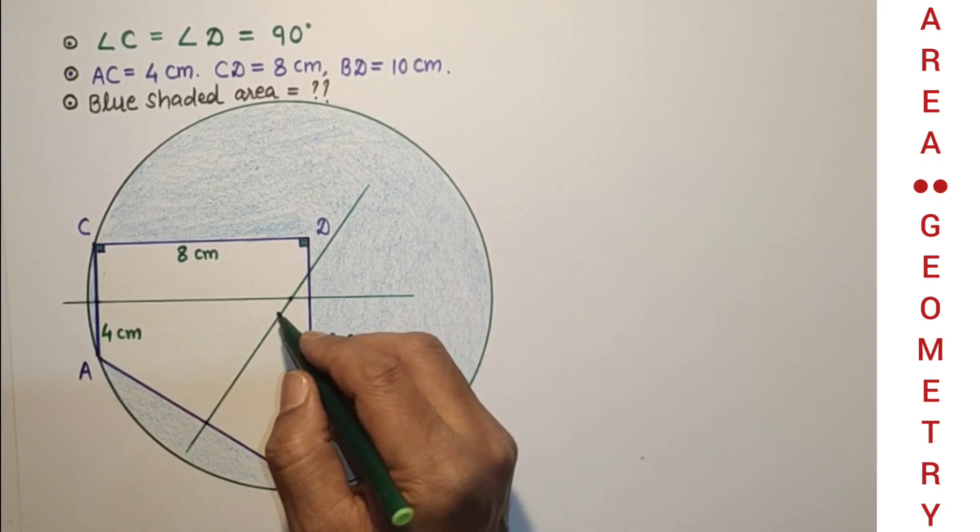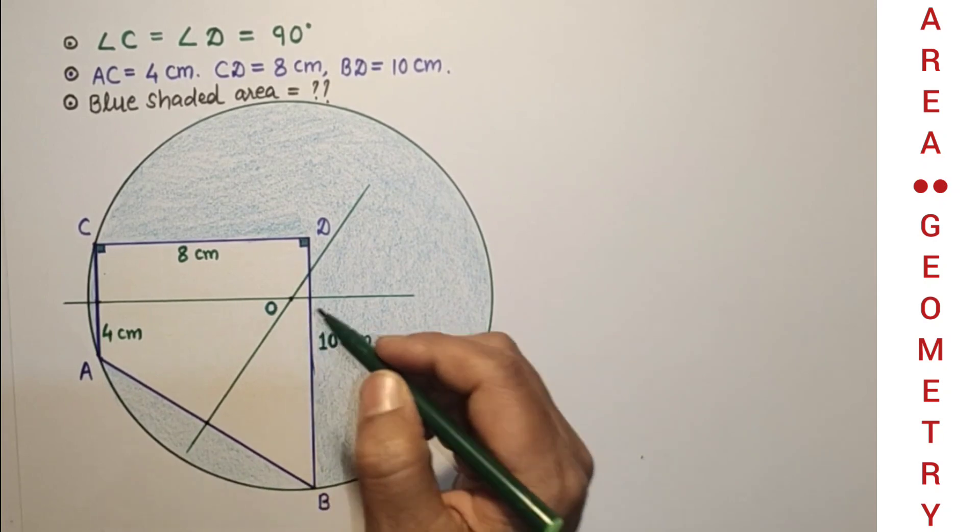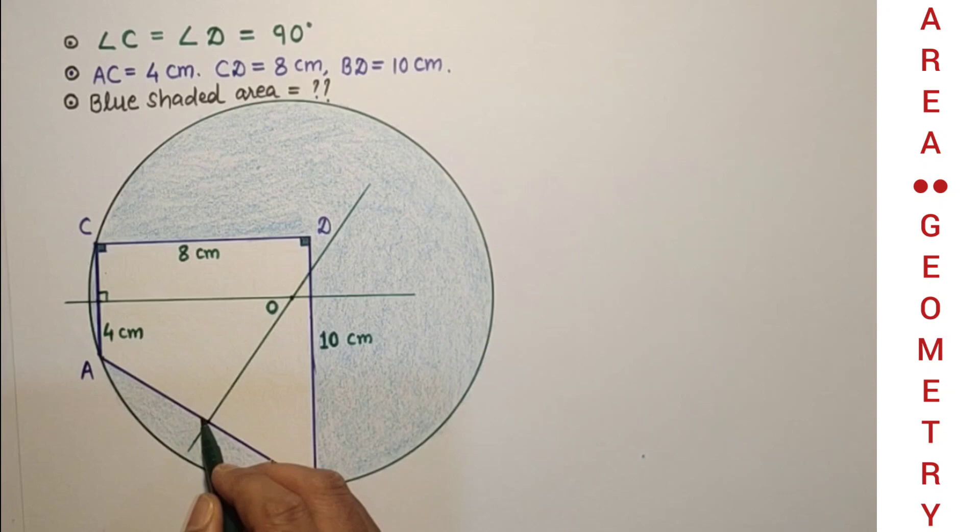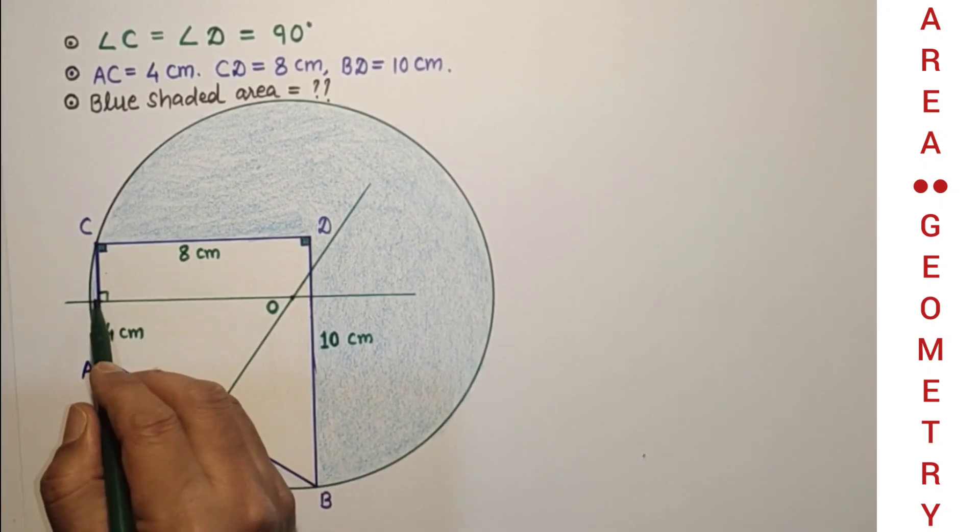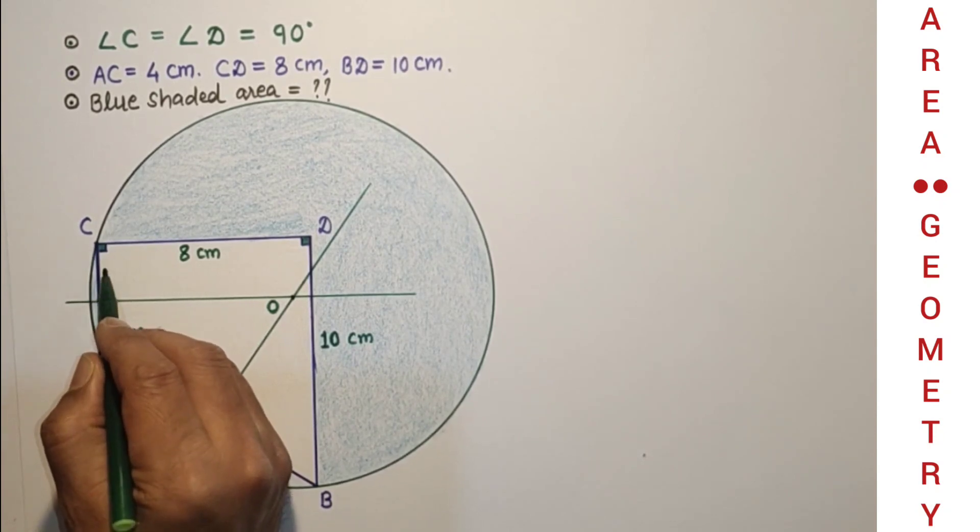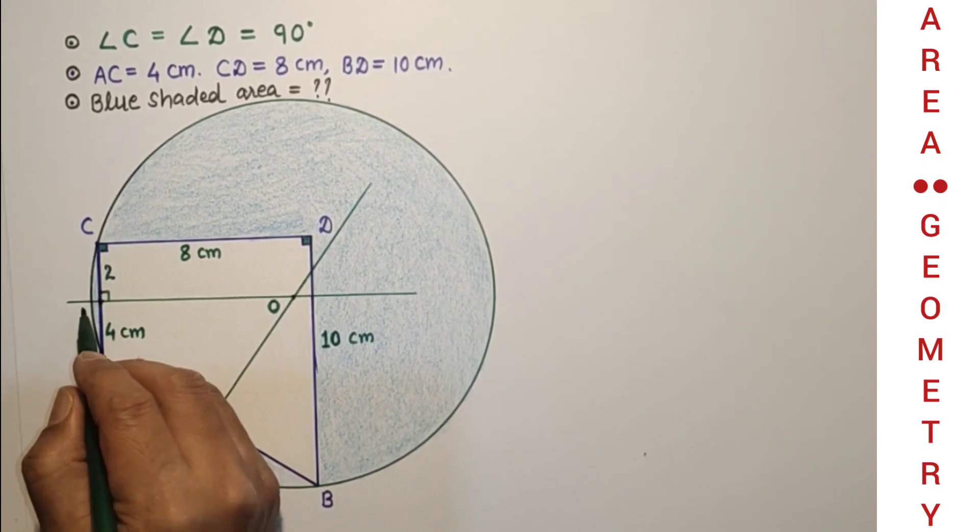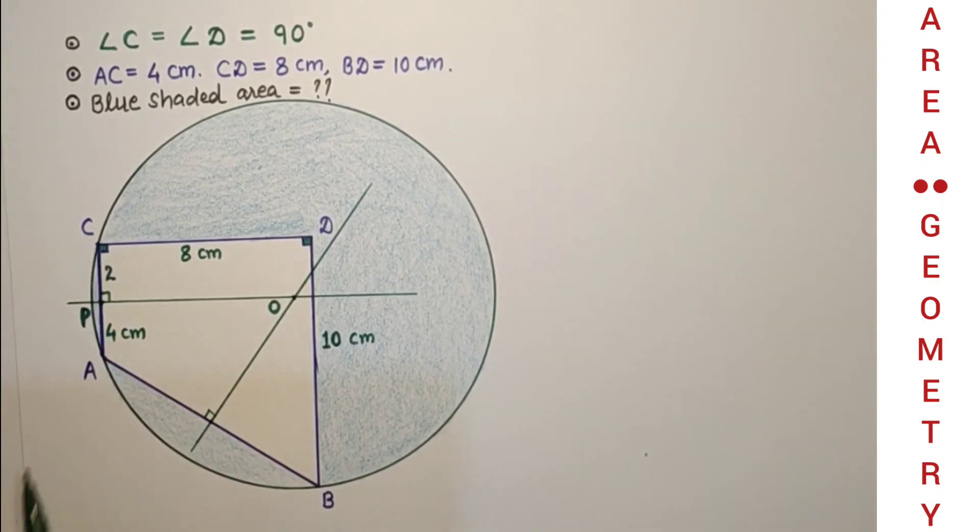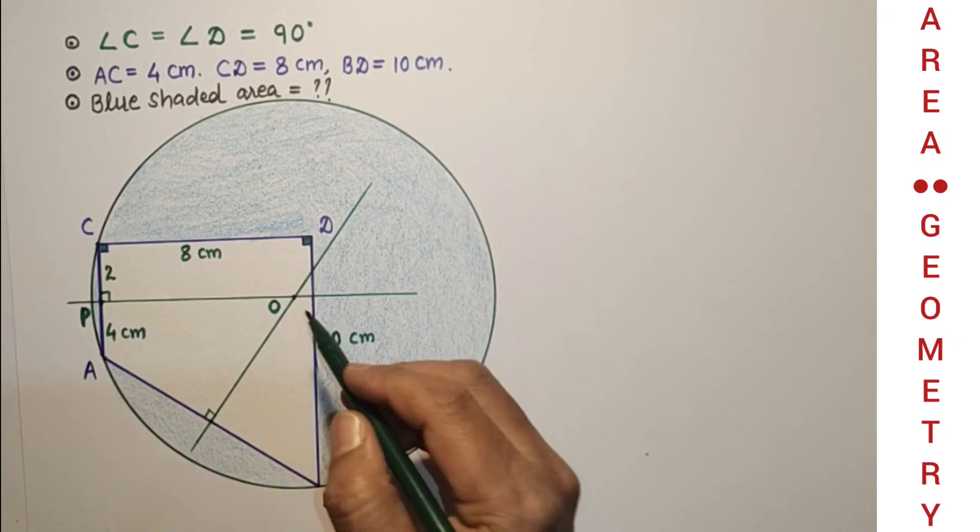Let us suppose this point is O, and this is 90 perpendicular bisector. So whole CA is 4, so this only will be 2 cm. Let us suppose this point is P, so PC is 2 cm.